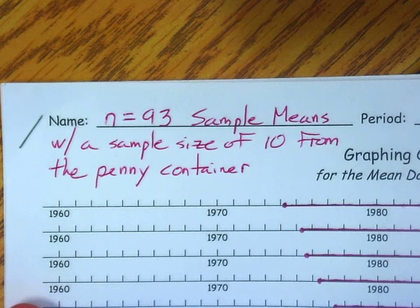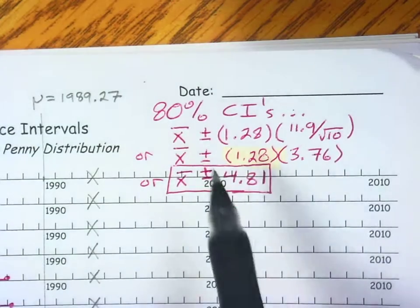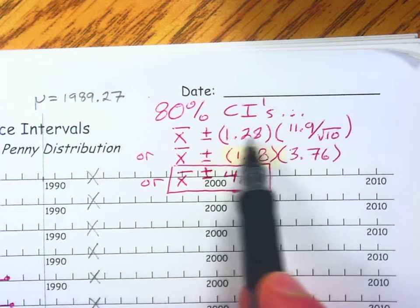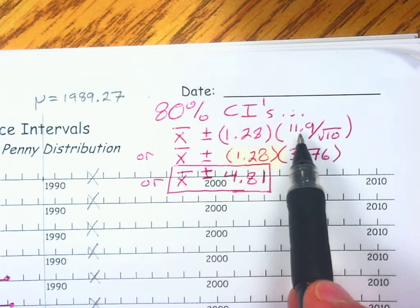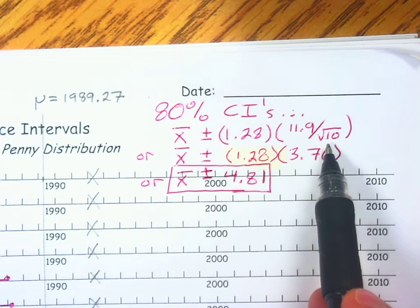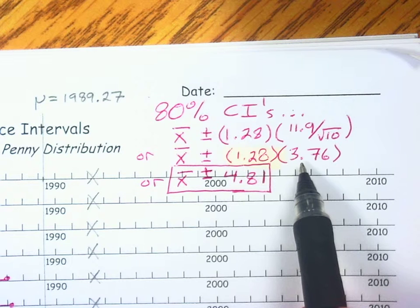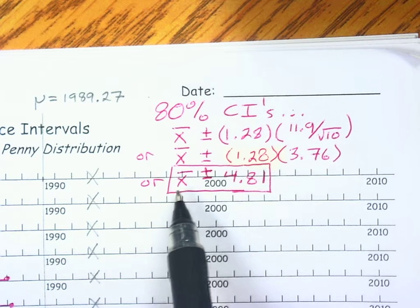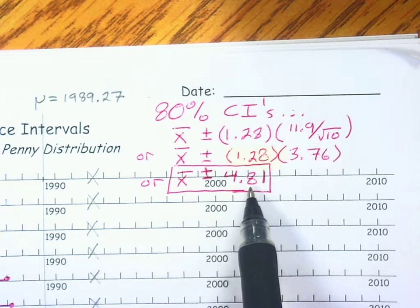Approximating normality, I want you to see what all 93 confidence intervals look like if we built all 93 at 80% confidence. To build an 80% confidence interval, I take all 93 sample means and add and subtract the critical value of 1.28 standard deviations. This time we divide by the square root of 10, giving us more variability. The margin of error this time is 4.81 years.